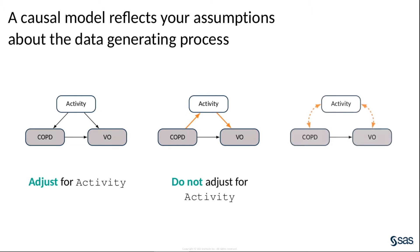Yet another alternative is that activity does not have any direct causal links to the treatment or outcome variables. Rather, there are unobserved factors, such as genetic or environmental factors, that create confounding association between COPD and activity, and between activity and VO2max. Under these assumptions, you would again use the marginal rather than adjusted association in order to estimate the causal effect.